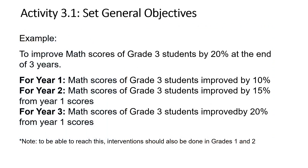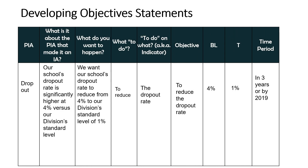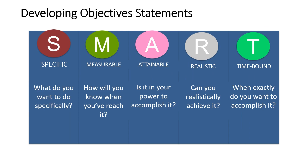For example, PIA: dropout — what is it about the PIA that made it an improvement area? Our school dropout rate is significantly higher at 4% versus our division standard level. Then, what do you want to happen? We want our school's dropout rate to reduce from 4% to our division standard level of 1%. The objective is to reduce the dropout rate. The beginning level is 4%, the target is 1% in three years or by 2019. Remember, when you develop an objective, it should be specific, measurable, attainable, realistic, and time-bound — SMART.